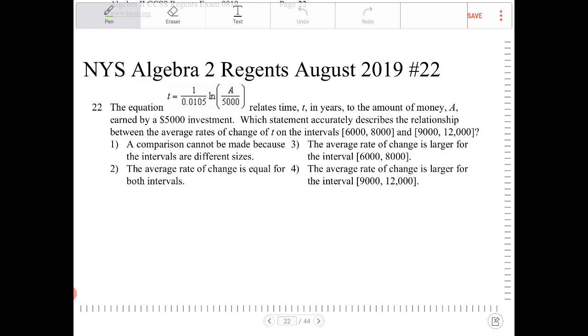Because we're asked to determine the average rate of change, we need to know the average rate of change formula. If you're given some f of x function, the average, denoted by that bar there, is going to be f of b minus f of a over b minus a. And again, this is the average between the interval of a to b.